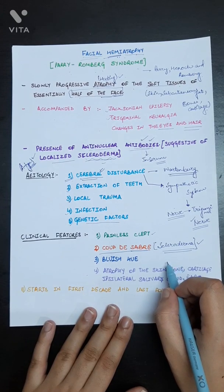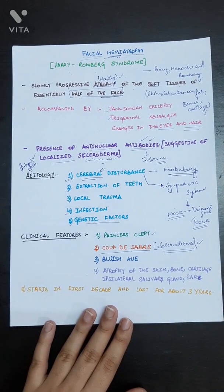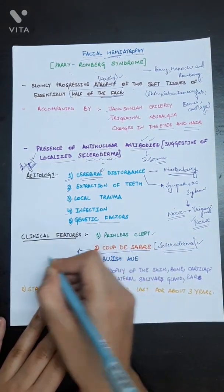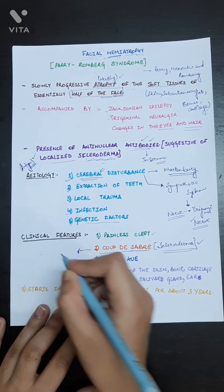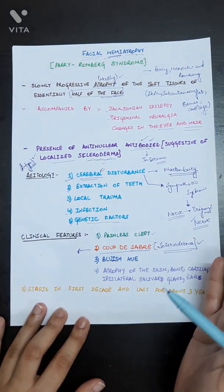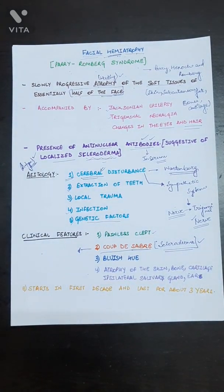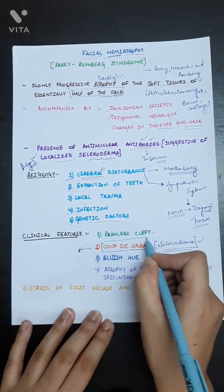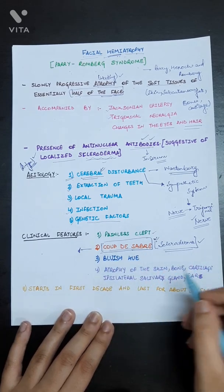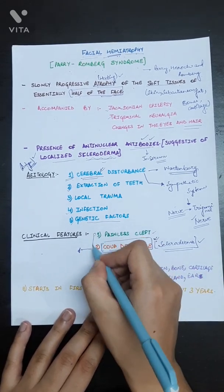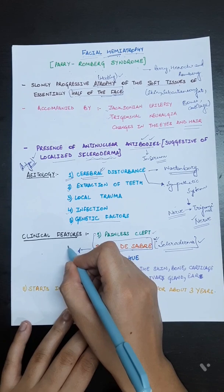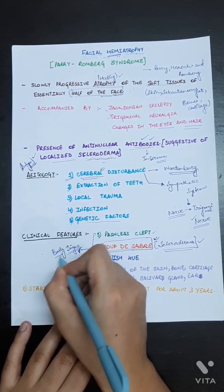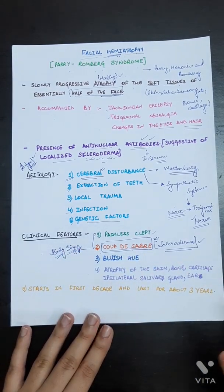It basically demarcated the face from normal skin. Affected skin and normal skin was differentiated or boundaried by Coup de Sabre. These were the early signs which were seen in facial hemiatrophy.